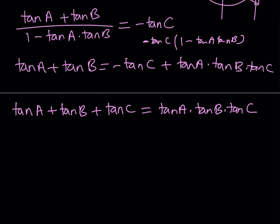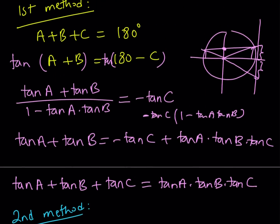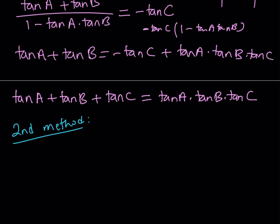Now let's talk about the second method. Even though it's similar to the first method, it has some different ideas. With the first method, we isolated A plus B on one side of the equation and then took the tangent of both sides. In this case, we're not going to put anything on the other side — we're going to keep everything as is and start with the left-hand side: tangent A plus tangent B plus tangent C.